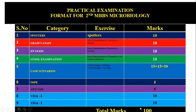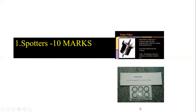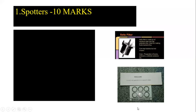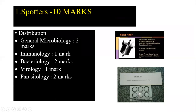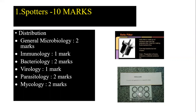For the spotters section worth 10 marks, the distribution is: General Microbiology - 2 marks, Immunology - 1 mark, Bacteriology - 2 marks, Virology - 1 mark, Parasitology - 2 marks, and Mycology - 2 marks. Questions are selected according to this pattern.